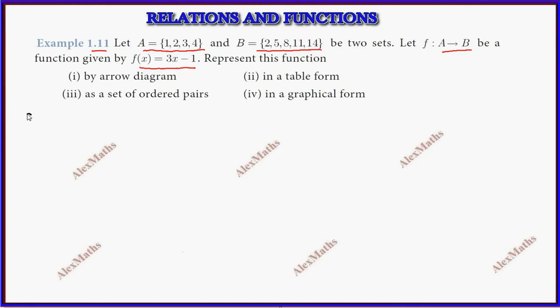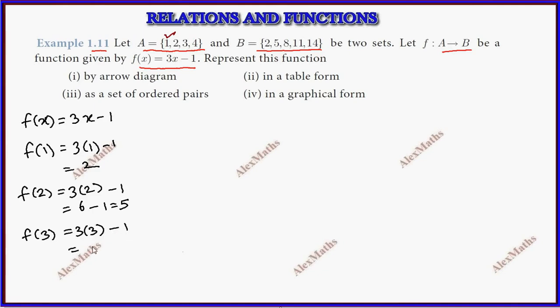For every value of x, the function value is f of x equals 3x minus 1. The first value: f of 1 equals 3 into 1 minus 1, which is 3 minus 1, which is 2. F of 2: 3 into 2 minus 1, total 6 minus 1, which is 5. F of 3: 3 into 3 minus 1, so 9 minus 1, which is 8. F of 4: 3 into 4 minus 1, which is 11.